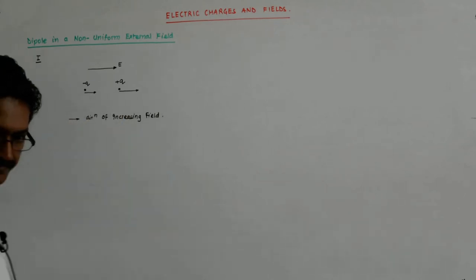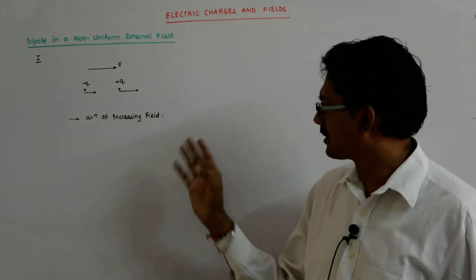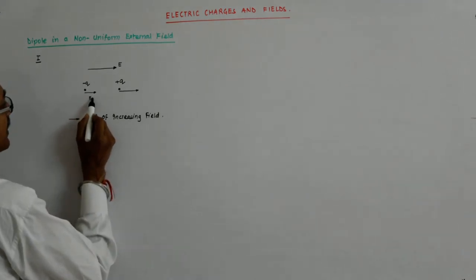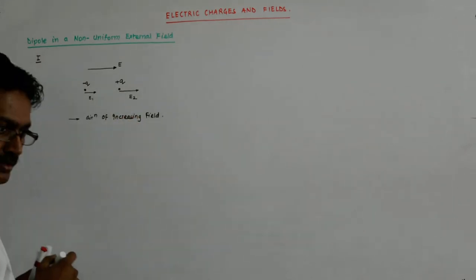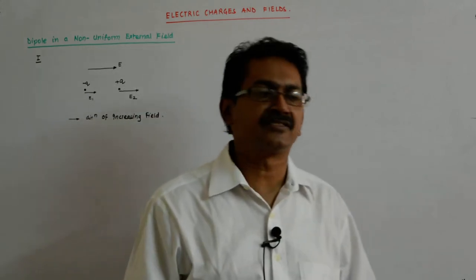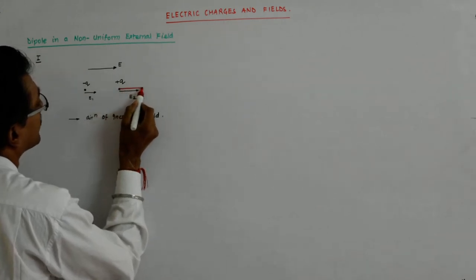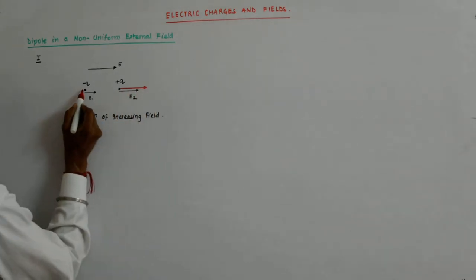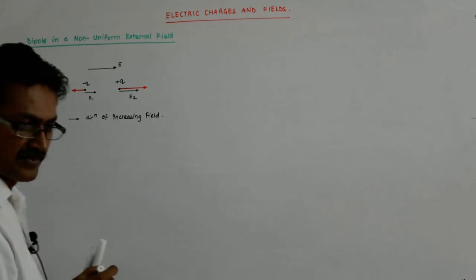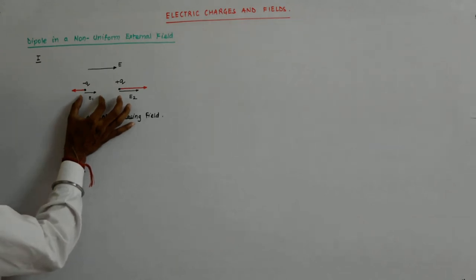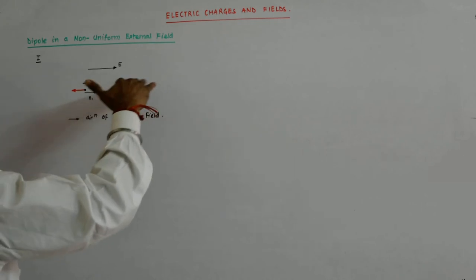So the field here has increased. Say E1 here and E2 here — they're different. Their magnitude is different; the direction at both places remains the same. So the force experienced by the positive charge is q times this field, and the force on the other charge is in the opposite direction but a smaller magnitude, because E1 is smaller. The plus q and minus q magnitude is the same but the field magnitudes are different.